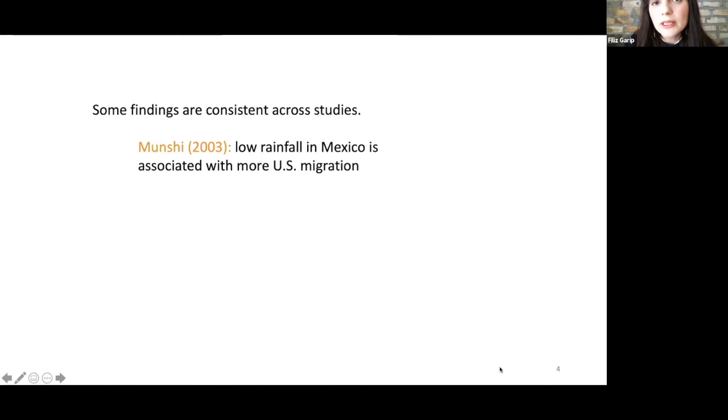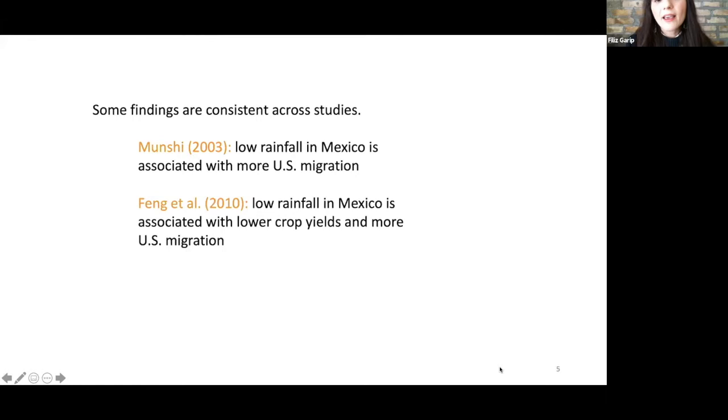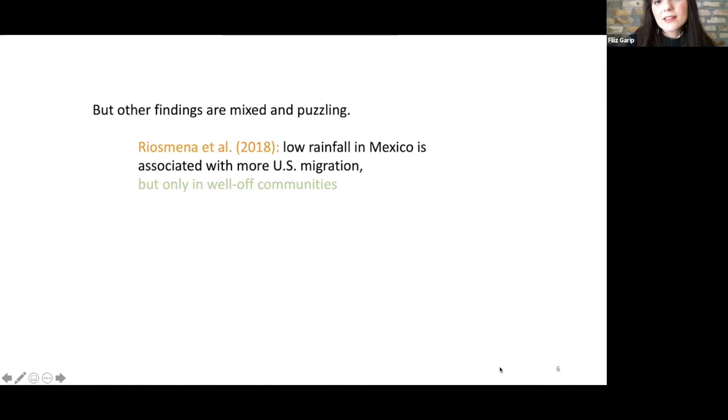Some of the findings that we've started to accumulate are quite consistent across studies. For example, if we look at the Latin American or Mexican setting, studies like Munshi's work shows that low rainfall in Mexico brings more US-bound migration, and the positive mechanism there is lower agricultural yields. When it doesn't rain, then you can't produce, and you're cash stripped, and migration offers an adaptation strategy. Later on, Fang and others' work have tested this particular mechanism, the decline in agricultural yields, and show that indeed, when rainfall is low, agricultural yields go down, and there's more US migration.